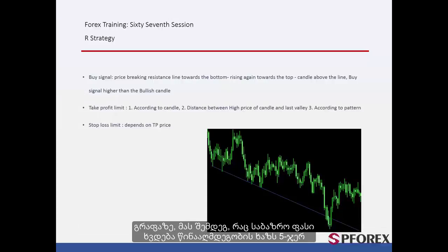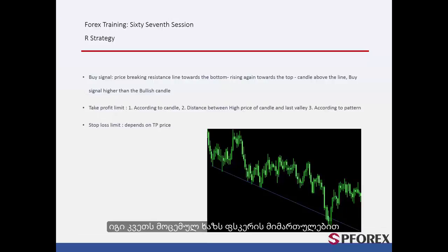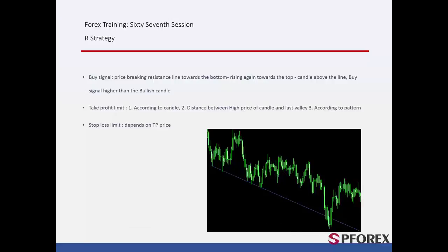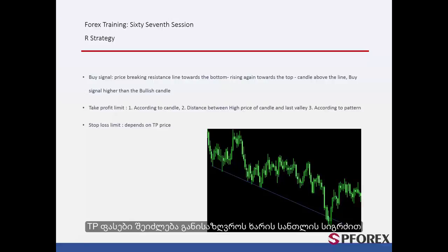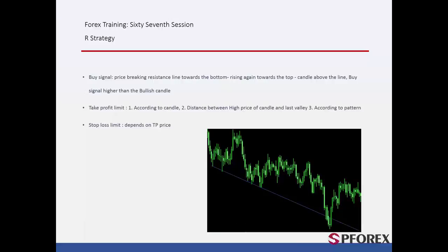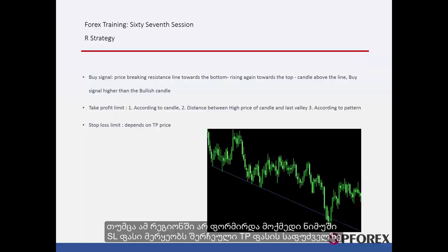On the graph, after the market price hit the resistance line five times, it crossed the given line towards the bottom, then returned towards the top. As a candle formed above the resistance line, a trader could place a buy order. TP prices could be determined by the bullish candle length and the distance between the high price of this candle and the low price of the candle on the last valley. However, there was no valid pattern in this region. SL price varied based on the selected TP price.